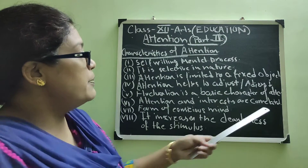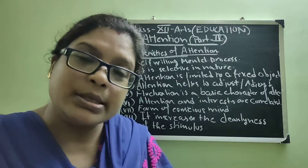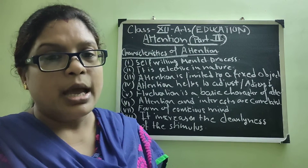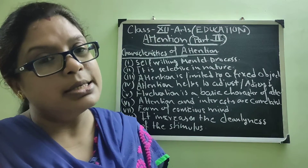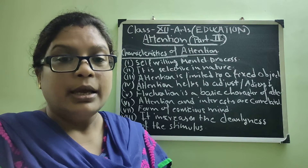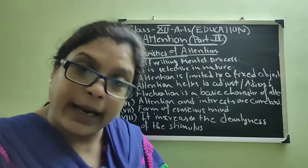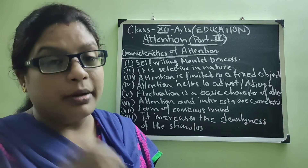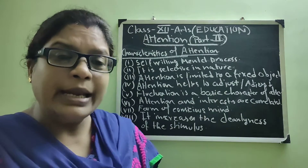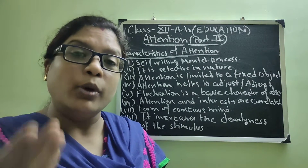Next point: fluctuation is a basic characteristic of attention. Without our consciousness, our mind tends to fluctuate. This fluctuation is a very common feature — in a fraction of a second, the mind moves from your particular topic and then comes back again. This is called fluctuation of attention: when your mind is fluctuating from one thing to the other. Suppose there is a certain disturbance in your mind.